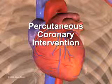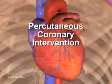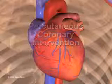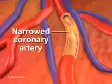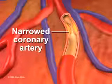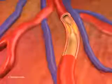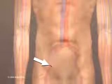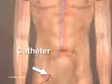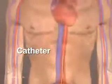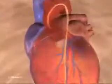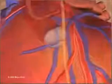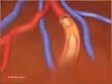Percutaneous coronary intervention, also known as coronary angioplasty, opens narrowed coronary arteries. A small, hollow tube called a catheter is inserted into an artery in the groin or arm and threaded to the affected artery.